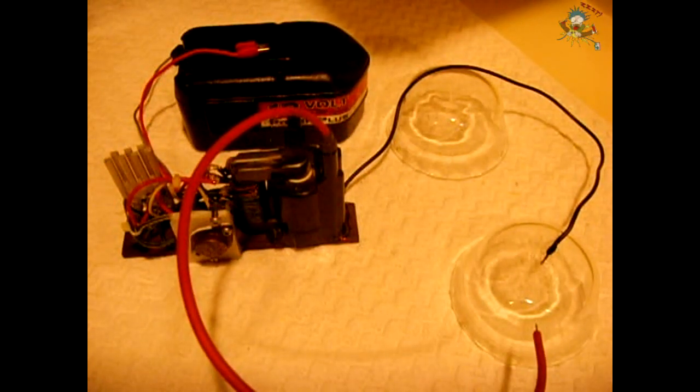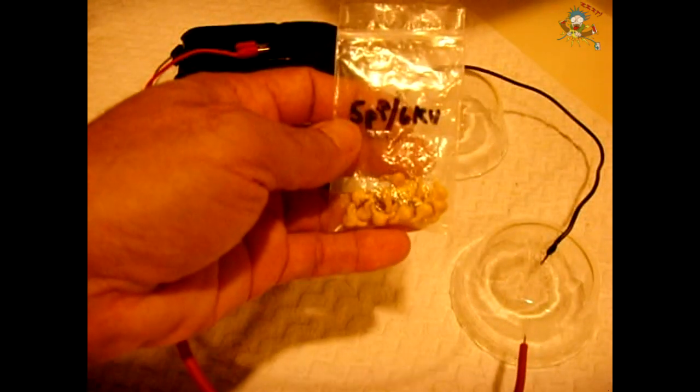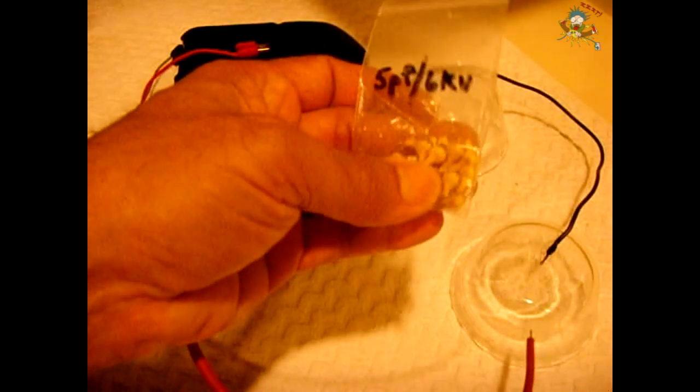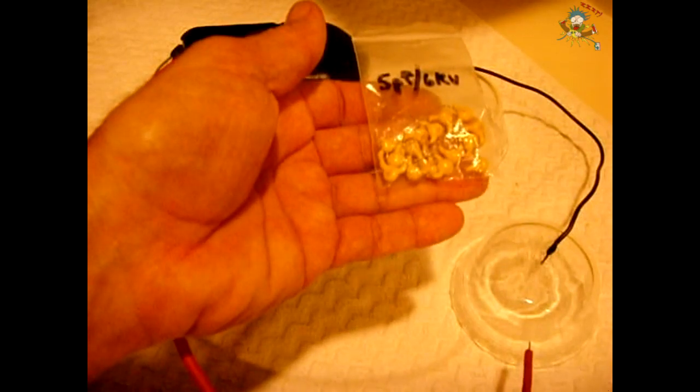While I was at the dump I also came across an LCD TV and I tore that thing apart and found a whole bunch of 5 picofarad 6 kilovolt, 6,000 volt capacitors. These can also come in handy for cascade multipliers as well.